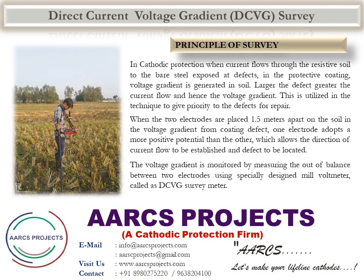This is utilized in the technique to give priority to defects for repair. When the two electrodes are placed approximately one and a half meters apart on the soil and a voltage gradient from a coating defect is present, one electrode adopts a more positive potential than the other, which allows the direction of current flow to be established and the defect to be located. The voltage gradient is monitored by measuring the out-of-balance between two electrodes using a specially designed millivolt meter, called the DCVG survey meter.